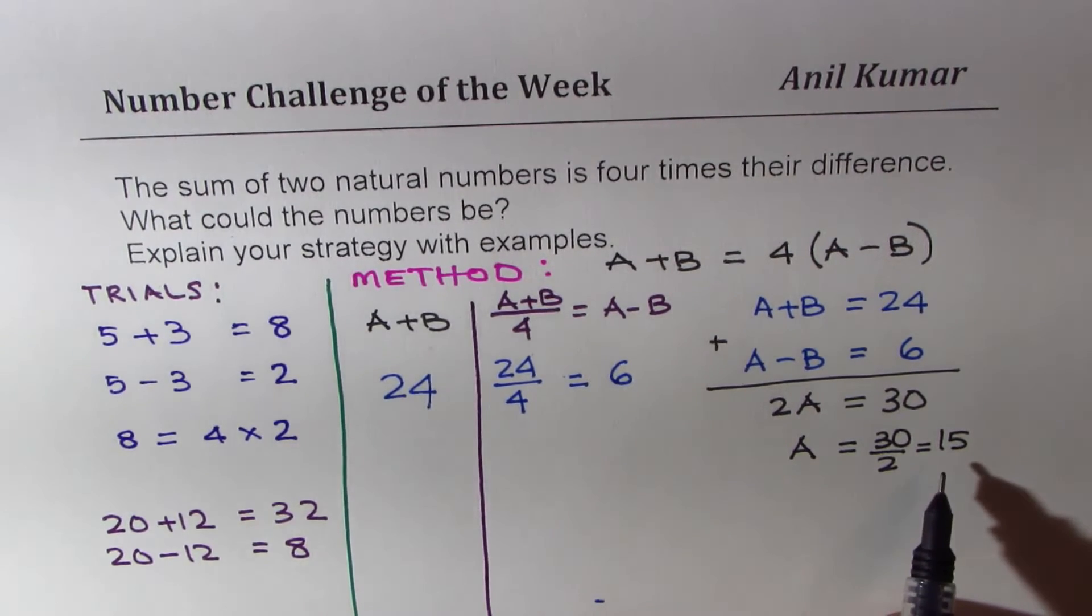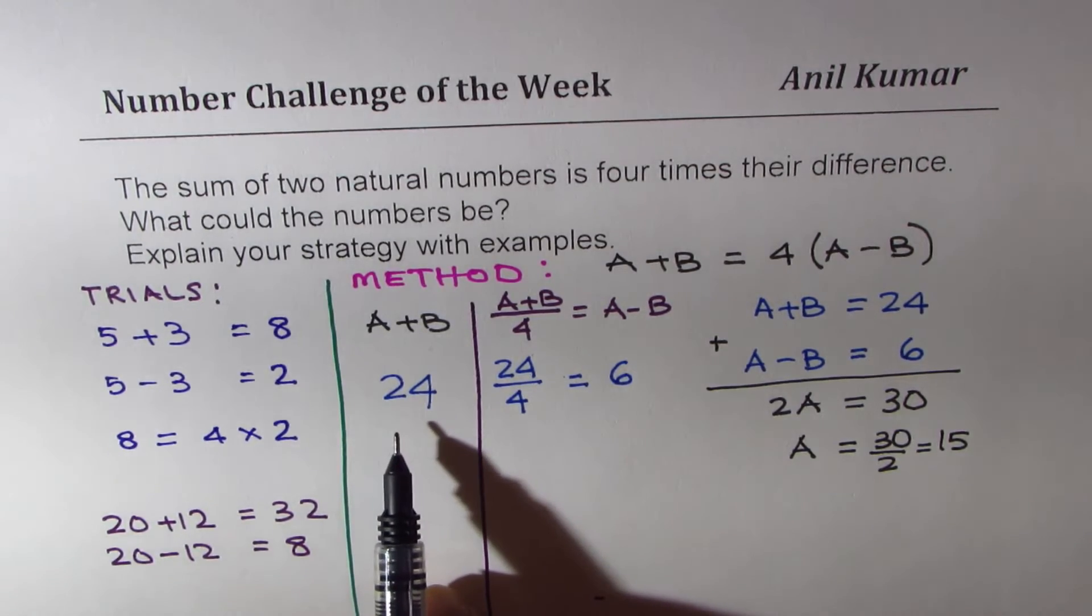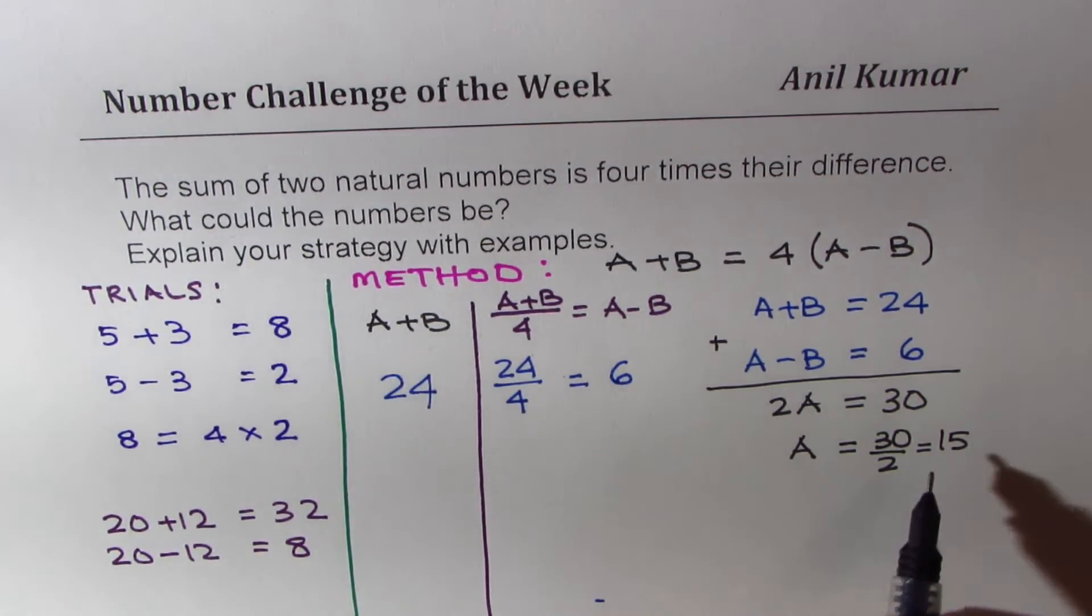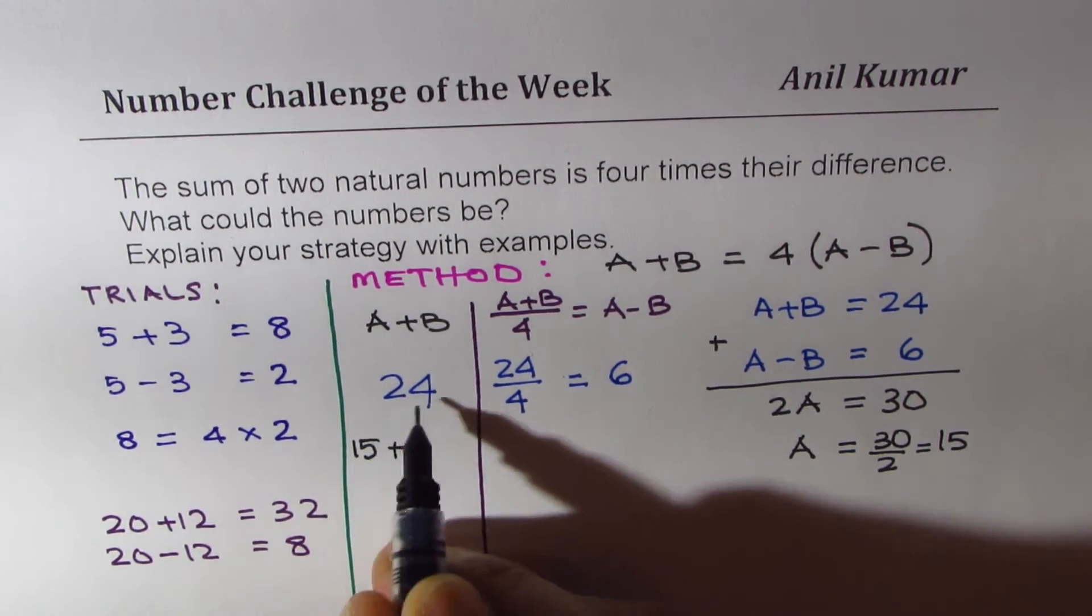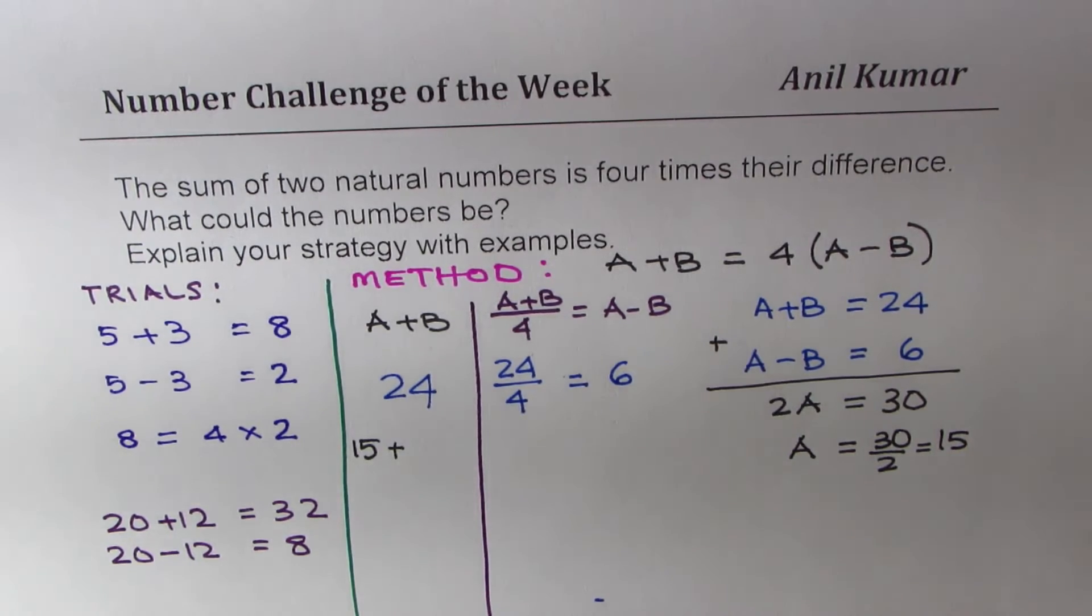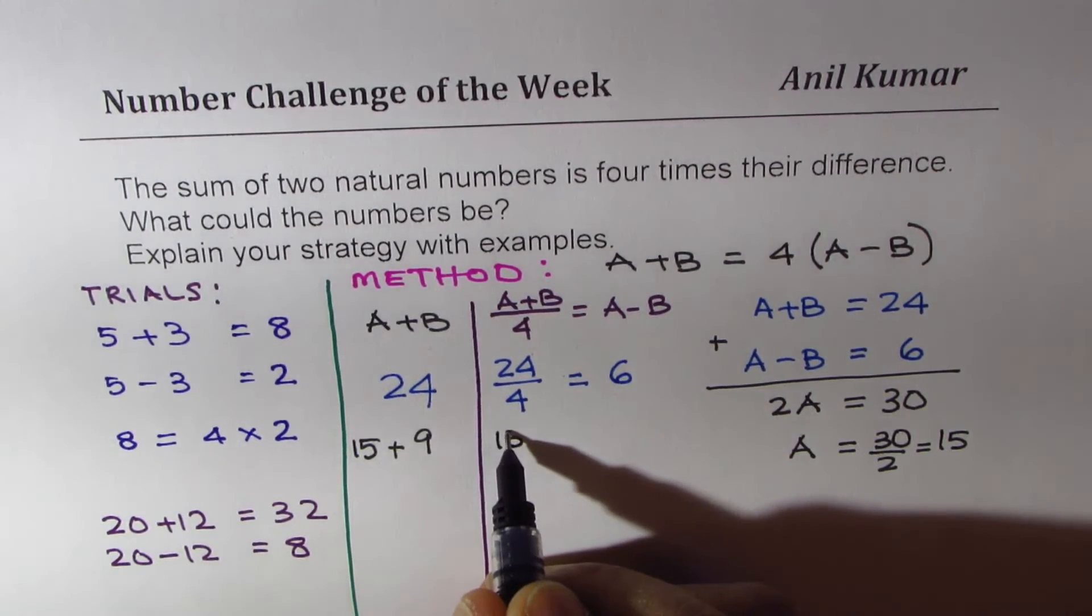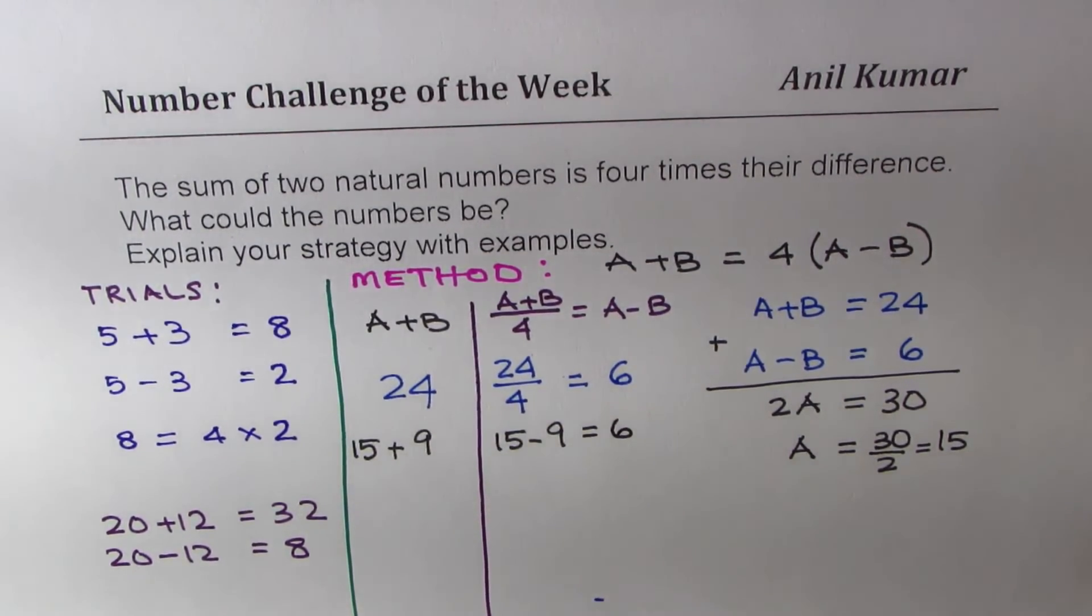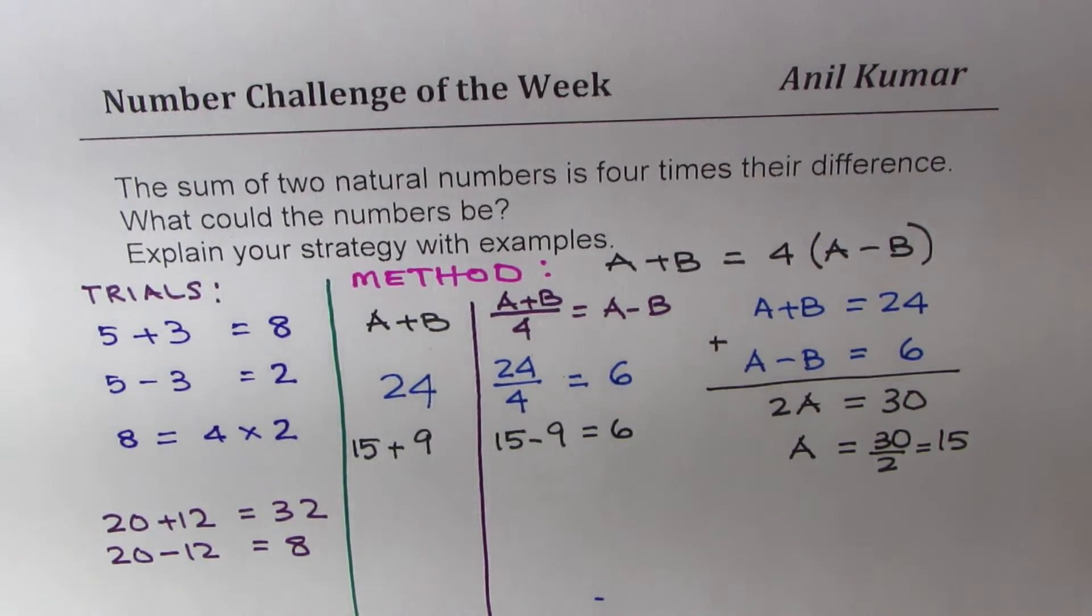We know A is 15. From here, we can now know that for the sum of A and B to be 24, we know A is 15. 15 plus what is 24? 15 plus 9 is 24. And you will also see that 15 minus 9 equals 6, and 4 times 6 is 24. So you get another set by logical approach.